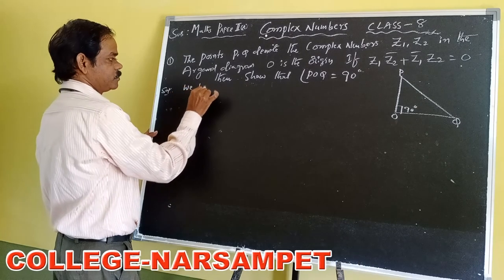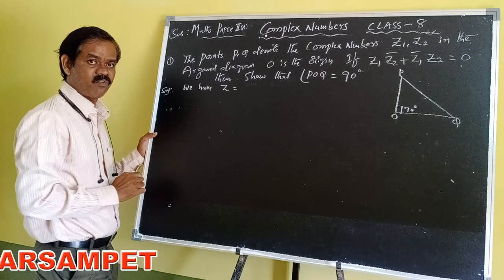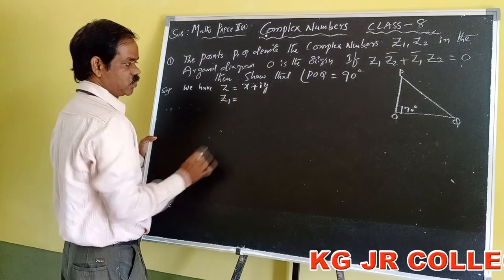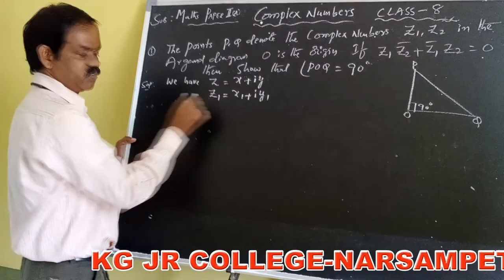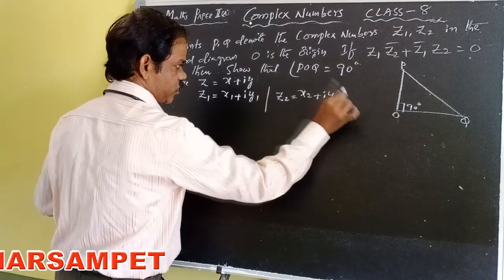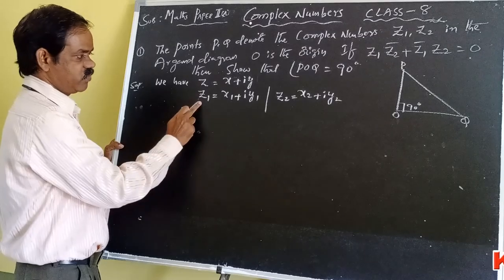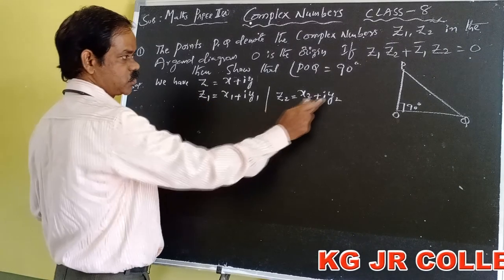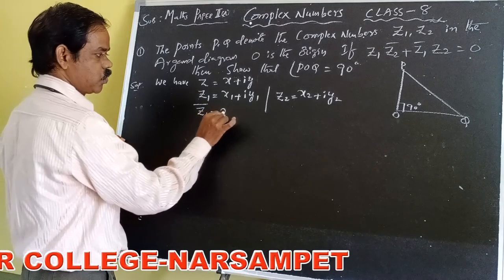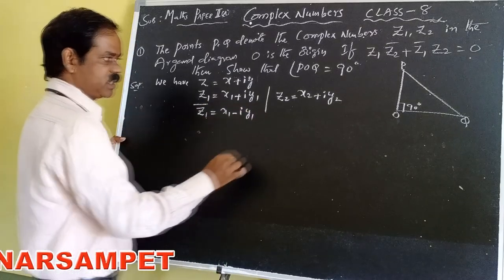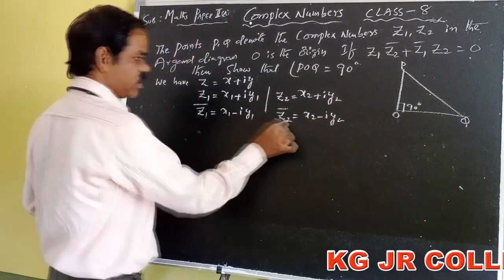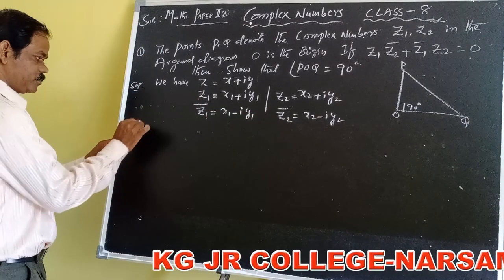The standard form of a complex number is Z = X + iY. So Z1 = X1 + iY1 and Z2 = X2 + iY2. The conjugate of Z1, written Z1̄, equals X1 − iY1. The conjugate of Z2, written Z2̄, equals X2 − iY2. These are the conjugates of Z1 and Z2.